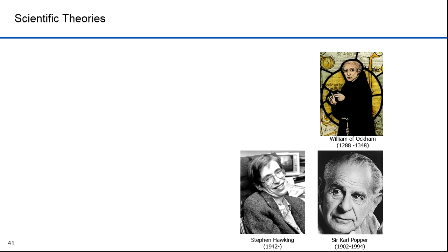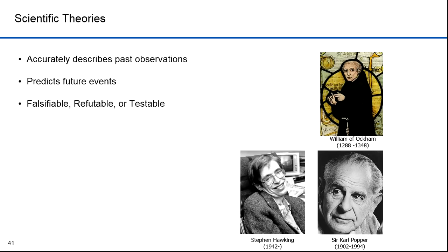Stephen Hawking in A Brief History of Time states, A theory is a good theory if it satisfies two requirements. It must accurately describe a large class of observations on the basis of a model that contains only a few arbitrary elements. And it must make definite predictions about the results of future observations. He goes on to state, Any physical theory is always provisional, in the sense that it is only a hypothesis. You can never prove it conclusively. No matter how many times the results of experiments agree with some theory, you can never be sure that for the next time the result will not contradict the theory. On the other hand, you can disprove a theory by finding even a single observation that disagrees with the predictions of the theory. The unprovable but falsifiable nature of theories is a necessary consequence of using inductive logic.